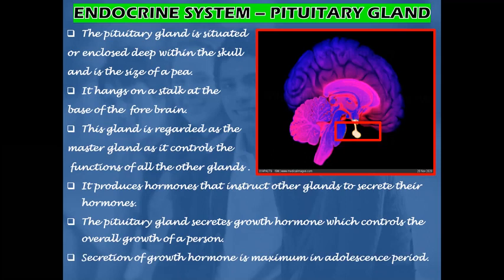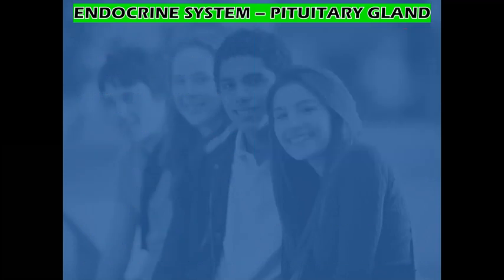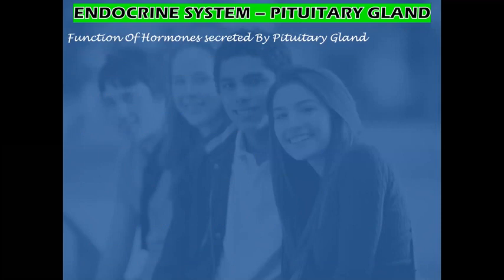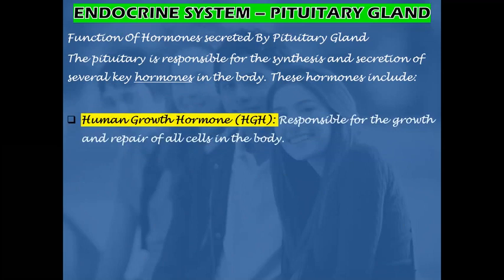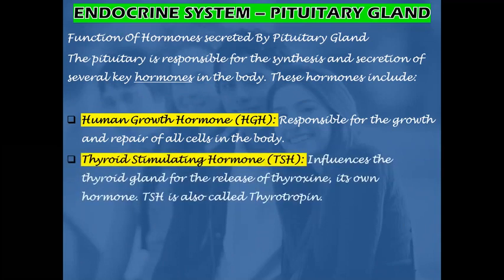The pituitary gland secretes growth hormone which controls the overall growth of a person. Secretion of growth hormone is maximum in the adolescence period. The pituitary is responsible for the synthesis and secretion of several key hormones in the body. These include growth hormone, responsible for the growth and repair of all the cells in the body. Thyroid stimulating hormone influences the thyroid gland for the release of thyroxin, its own hormone, and is also called thyrotropin.